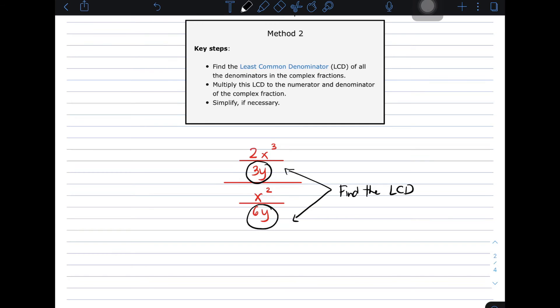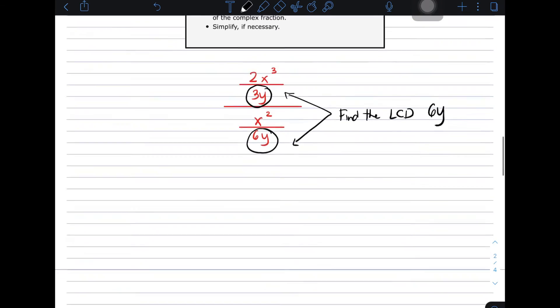Let's find the LCD of your denominators. So, our denominator is, since it is 6y and 3y, automatic, that is 6y. Right? So, what is the process we will do?